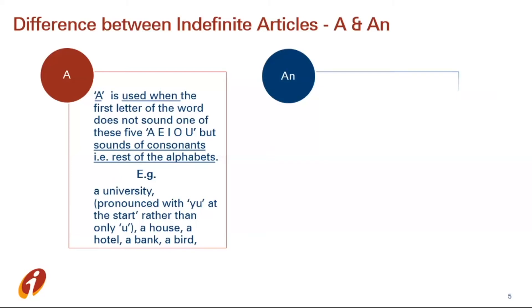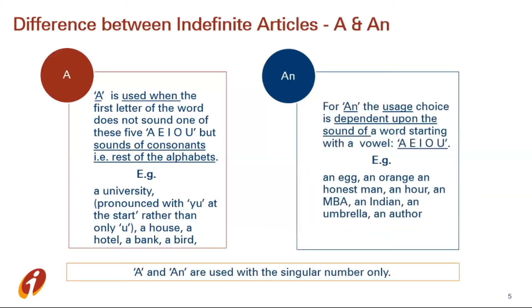'An' is used when the first letter of the word sounds like one of the five vowels — A, E, I, O, U. For example: an egg, an orange, an honest man. Here 'honest' starts with a consonant letter but sounds like 'o', which is a vowel, that's why we use 'an honest man'. Same goes with 'an MBA' — it sounds like 'em', which starts with a vowel sound. Always remember, 'a' and 'an' are used with singular number only.